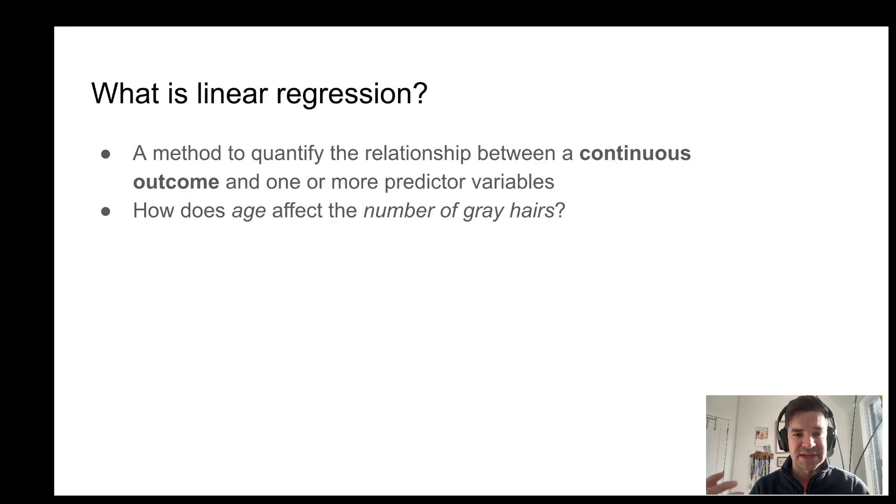So number of gray hairs, that's a continuous outcome. And in this case, age is our predictor.